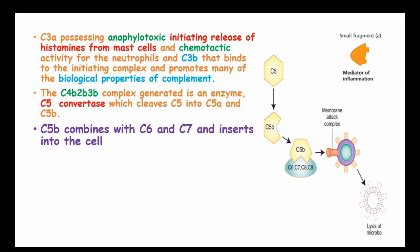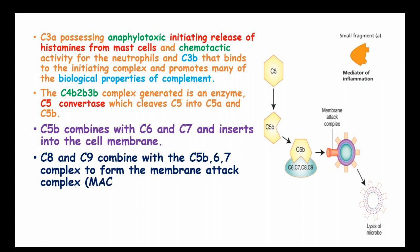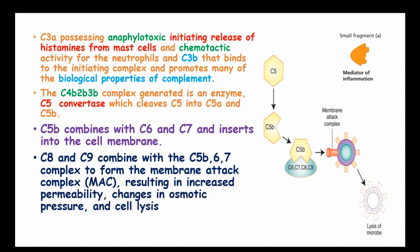C5B combines with C6 and C7 and inserts into the cell membrane. C8 and C9 combine with the C5B, C6, and C7 complex to form the membrane attack complex, resulting in increased permeability, changes in osmotic pressure, and cell lysis.